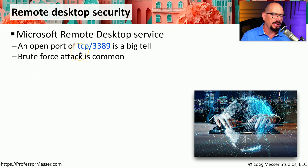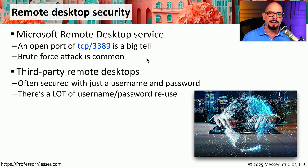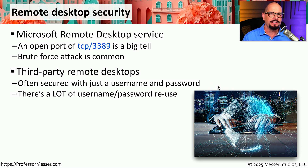If someone has an open port of TCP port 3389, then they are most likely running a remote desktop service, and someone with the correct credentials would be able to connect to this device and control the desktop. Someone might also be running VNC or one of the many other third-party remote desktop solutions. They're usually just secured with a username and a password, which makes it very easy to perform a brute force attack. So you might want to add additional authentication factors to keep anyone from connecting to your device from a remote location.